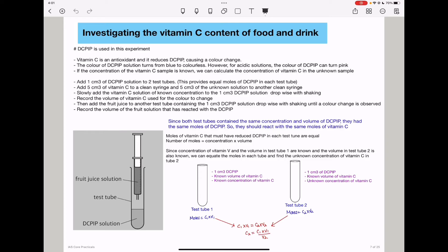So before we calculate, we have to know two facts. Since both test tubes contain the same concentration of DCPIP, they had the same moles of DCPIP, and therefore they have reacted with the same number of moles of vitamin C. No matter how much volume each has reacted with, if they are decolorized, it means they have reacted with the same moles of vitamin C. So that means the moles of vitamin C that must have reduced DCPIP in each test tube are equal.